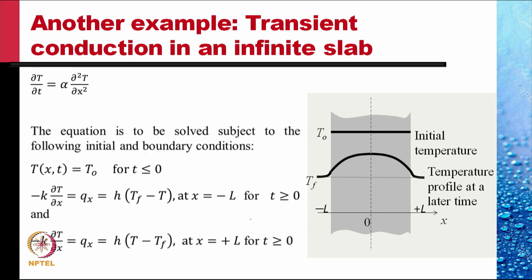This equation is solved subject to the following initial and boundary conditions. Initial condition: T = T₀ for all x at t ≤ 0. Boundary condition at x = −L for t ≥ 0: −k ∂T/∂x = h(Tf − T), equating conductive flux within the slab to the convective flux at the interface. Similarly for the right face at x = +L. So there is one initial condition and two boundary conditions.